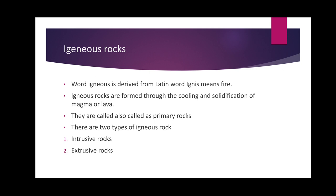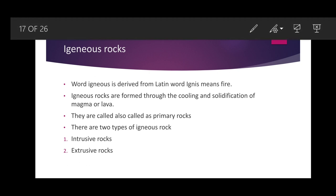First is igneous rock. The word 'igneous' is derived from the Latin word meaning fire. Igneous rocks are formed through the cooling and solidification of magma or lava. The magma which comes out of a volcano is called lava, and when this lava cools and becomes solid, those rocks are called igneous rocks. They are also called primary rocks because they are believed to be the first rocks formed on the earth, and all other rocks are ultimately derived from igneous rocks.